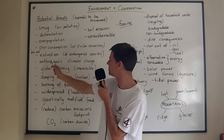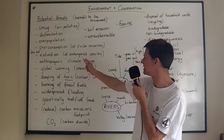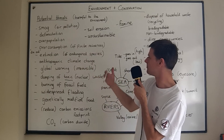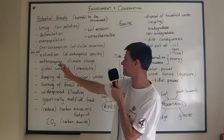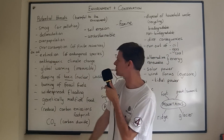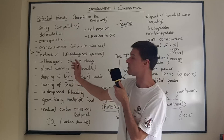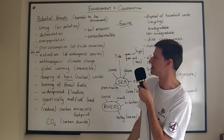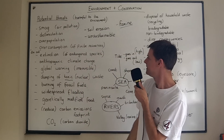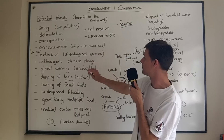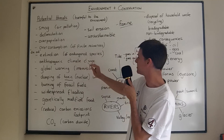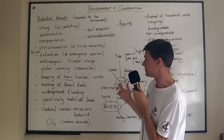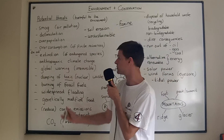We also talk about the extinction of endangered species. For example, tigers in many areas are facing extinction — you can also say tigers are dying out. An endangered species is a species like the tiger which is facing extinction.